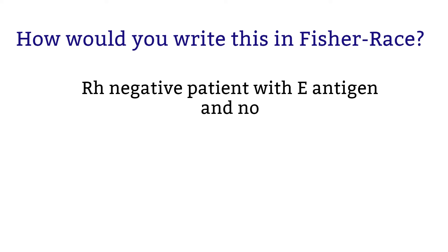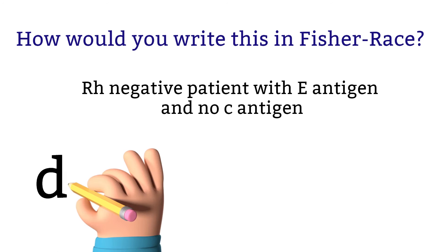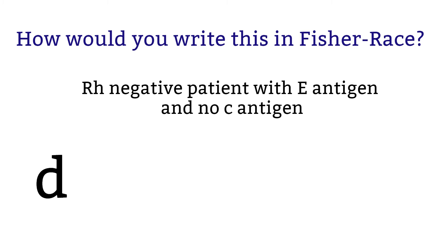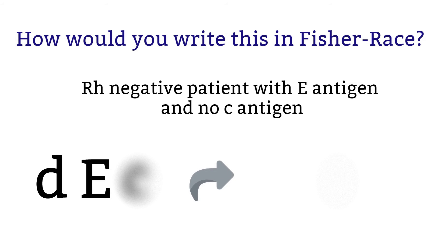Let's work on one with an RH negative patient — an RH negative patient with E antigen and no C antigen. The patient is RH negative, so you can choose to write lowercase d to represent there's no D antigen, or don't write anything at all. Moving on to the E antigen: we know the patient has E antigen, so we write uppercase E. Next, we're missing C antigen, so that will be lowercase c. Once we put it together, we will have little d, little c, big E — or you can just have little c, big E.